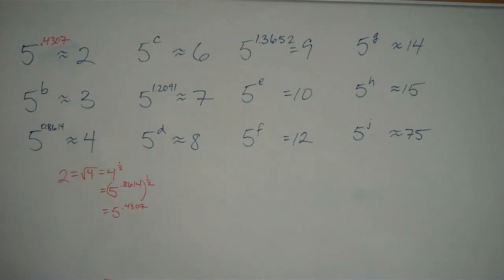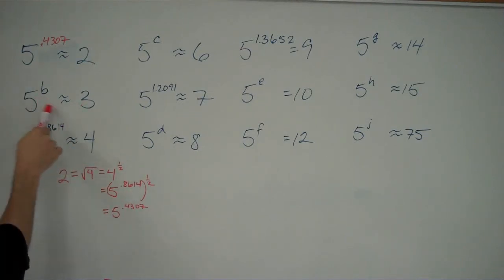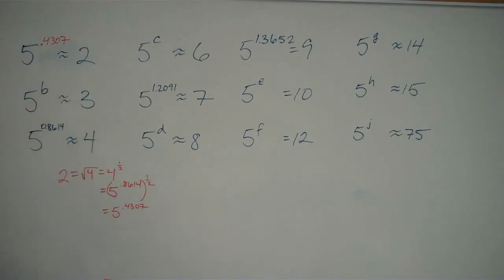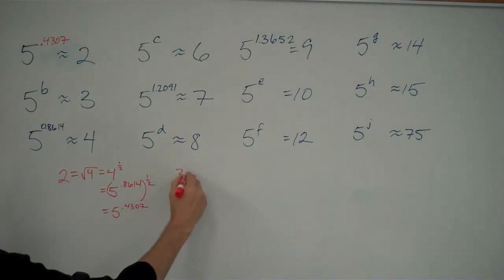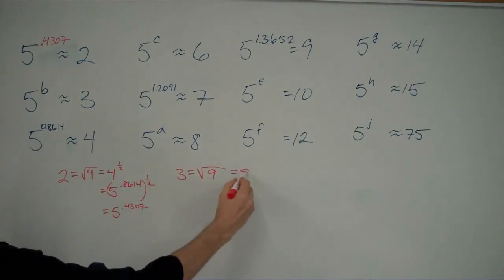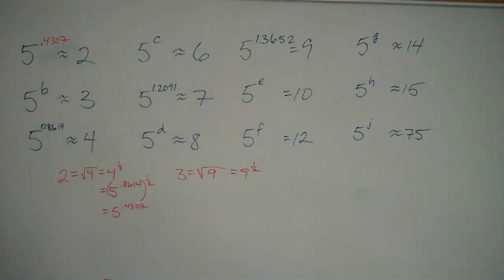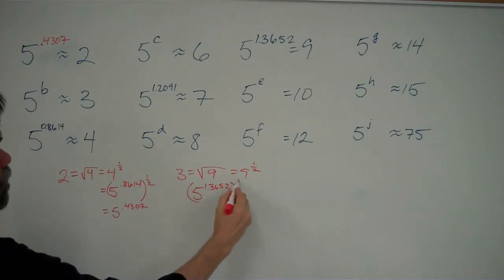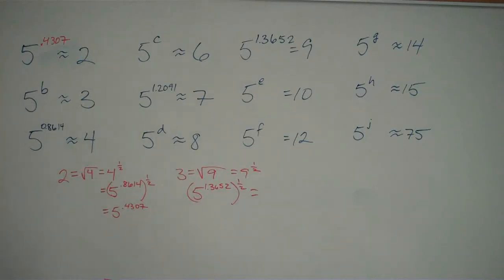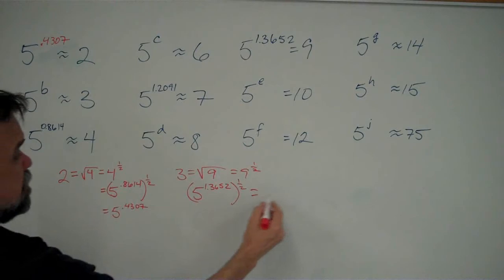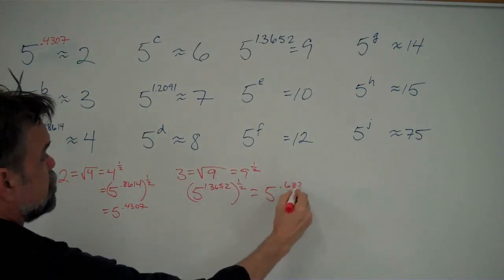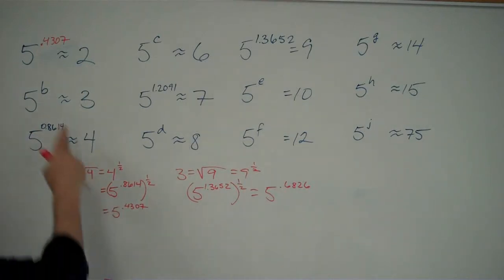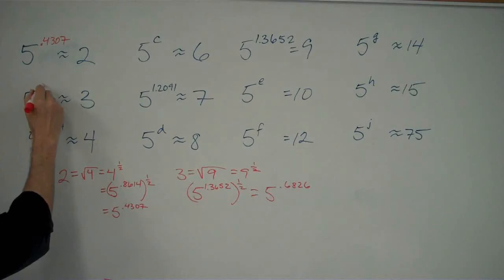What about B? I want to know what is 5 to the something power equals 3? We can actually do the exact same thing, because we have 3 squared, which is 9. So 3 equals the square root of 9, and that's 9 to the 1/2 power. Since I have 9 to the 1/2 power, I can express 9 as 5 to the 1.3652 power, to the 1/2. Multiplying 1.3652 times 1/2, I get 5 to the 0.6826. So the answer for B is 0.6826.